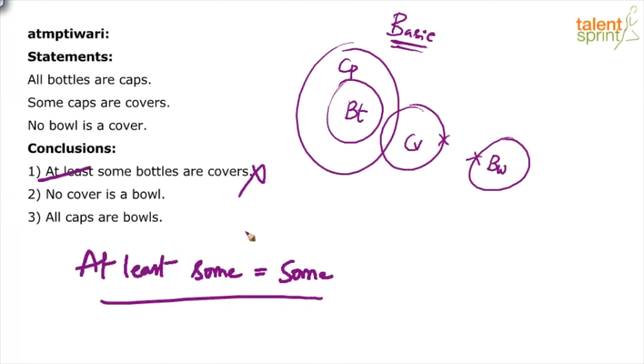Look at conclusion two: no cover is a bowl. Yes, this is definitely true. You don't even have to look at the diagram for this one because the statement was no bowl is a cover, and the conclusion is no cover is a bowl. We very well know that for no A is B, the definite conclusion is no B is A.